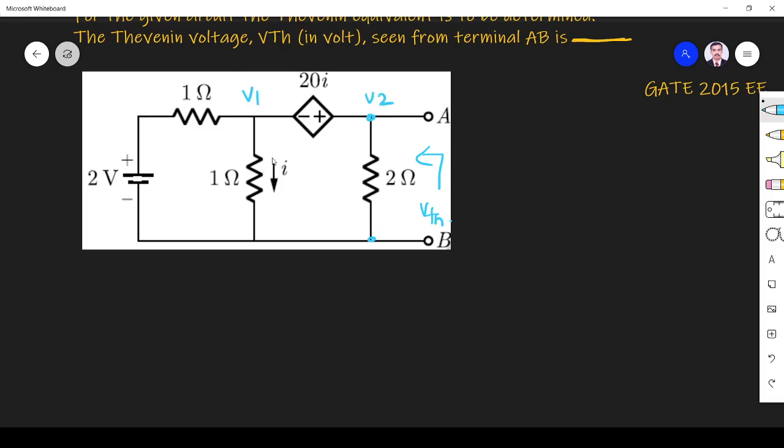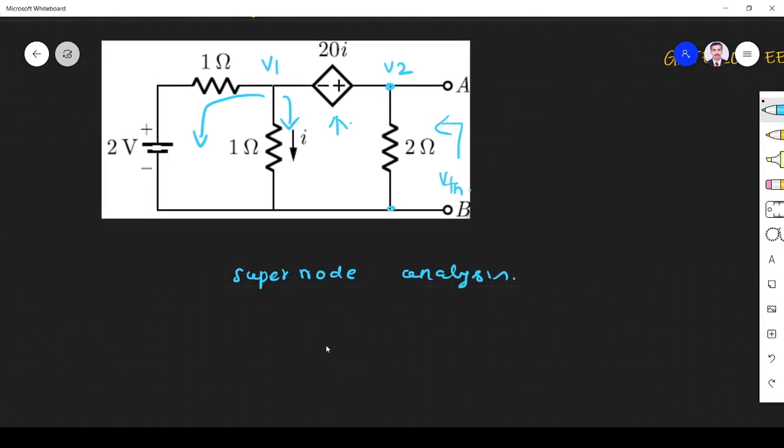I apply KCL. I write node equation for every branch. You see, in between two non-reference nodes we have one voltage source, a dependent voltage source. So we have to apply super node analysis.